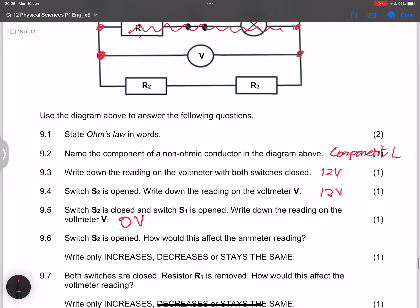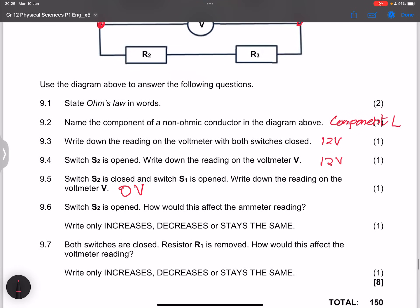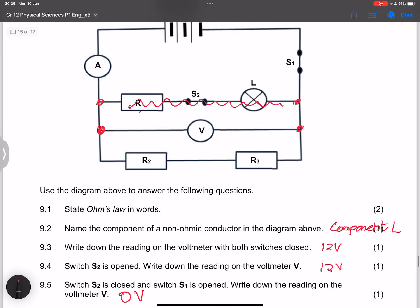And now that means that once the resistance increases, we will therefore decrease the current. So in this case, they said S2 open, how will this affect the ammeter reading? That will definitely decrease the ammeter reading. The current would decrease.